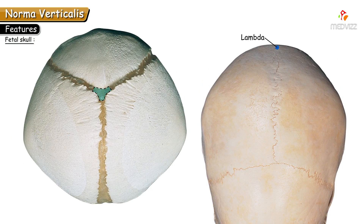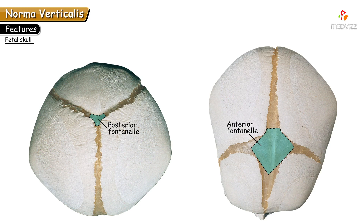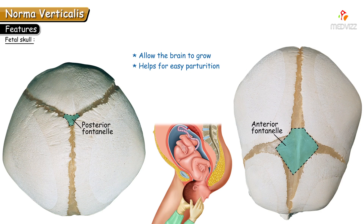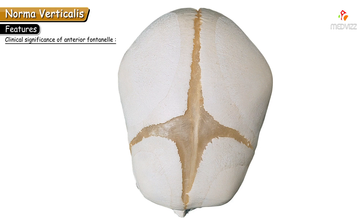The anterior fontanelle closes 18 months to 2 years after birth. The membranous gap at the site of lambda is the posterior fontanelle, which closes 2 to 3 months after birth. These membranous gaps allow the brain to grow in fetuses and infants, and they help with easy parturition — during childbirth the bones of the skull overlap each other, allowing molding.